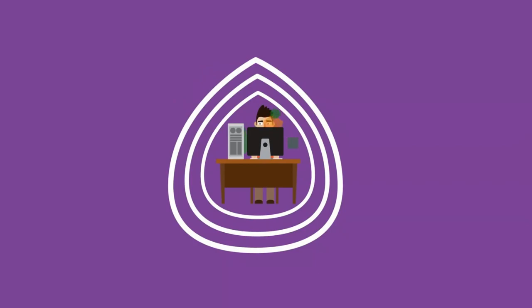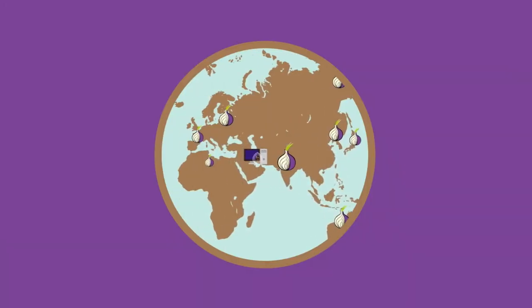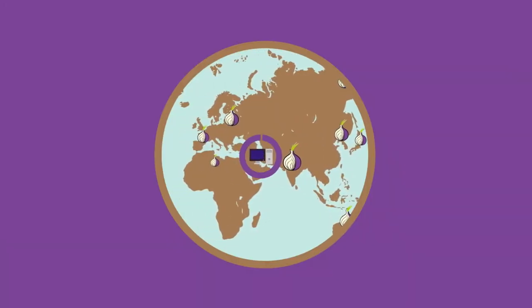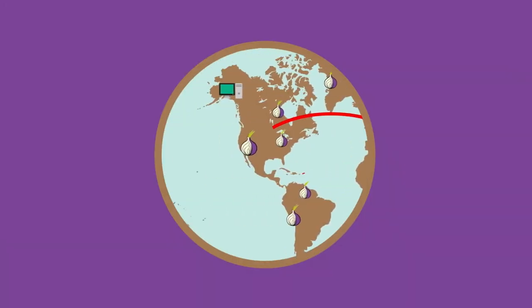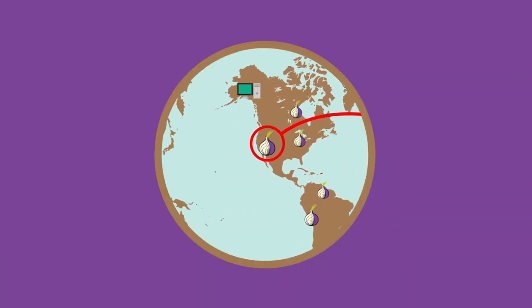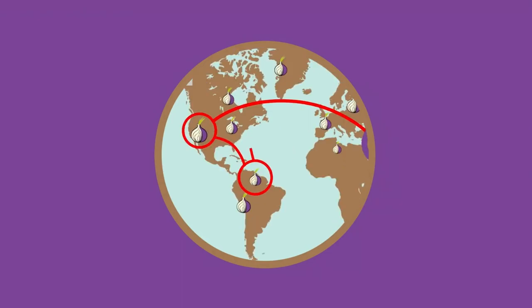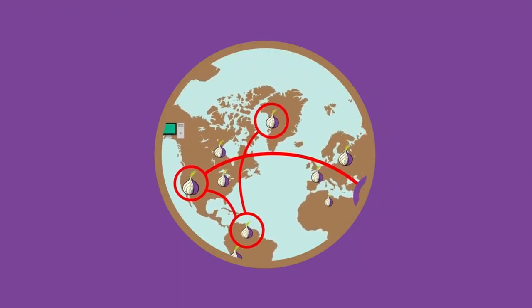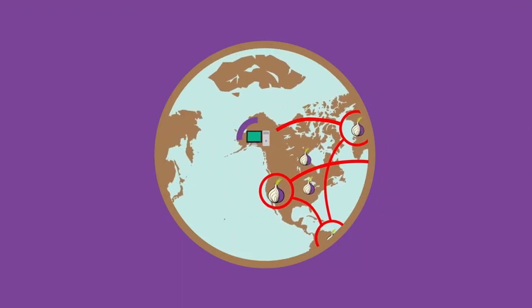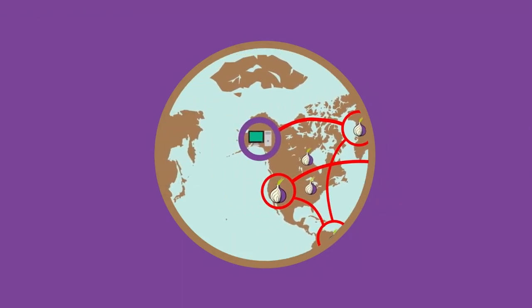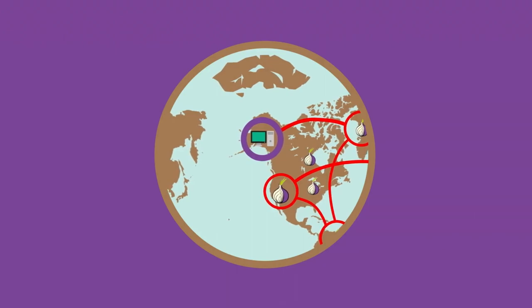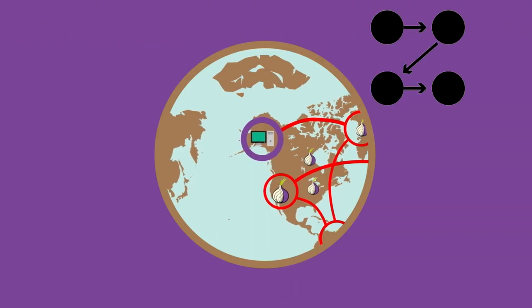This is basically how Tor operates today, with information encrypted three times by three different voluntary servers, referred to as nodes, located randomly around the world, with each node unaware of its own position in the sequence.